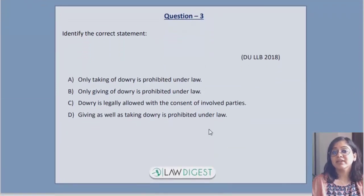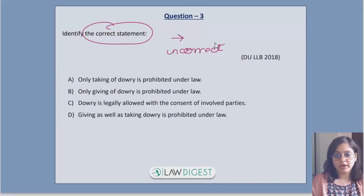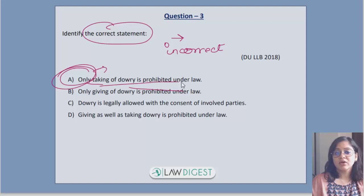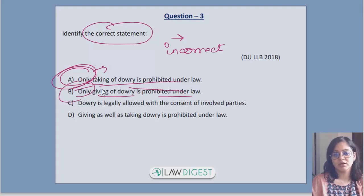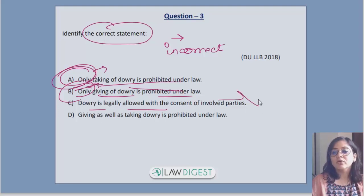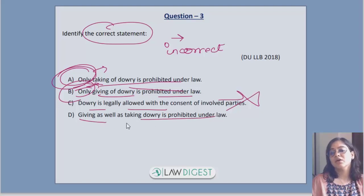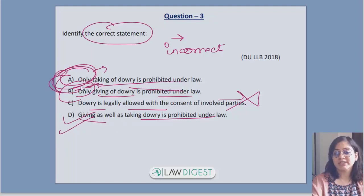Moving forward to question 3: identify the correct statement. The incorrect statements to rule out are: 'only taking of dowry is prohibited under law' — the word 'only' makes this incorrect; 'only giving of dowry is prohibited' — also incorrect; 'dowry is legally allowed' — this is completely incorrect. The correct answer is: giving as well as taking of dowry is prohibited under law. Options A and B are incomplete sentences.